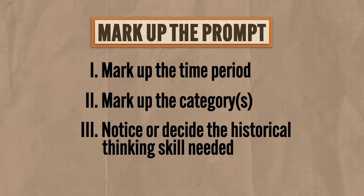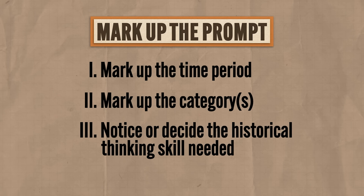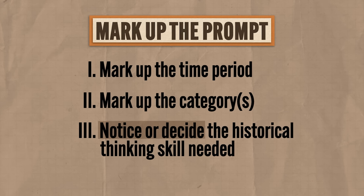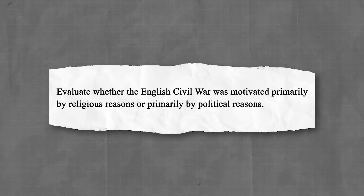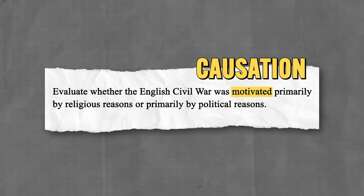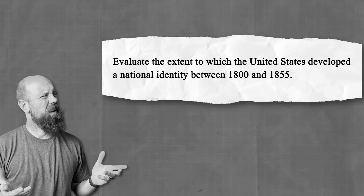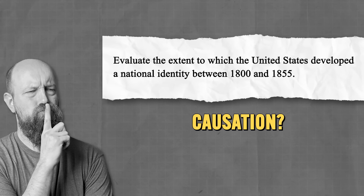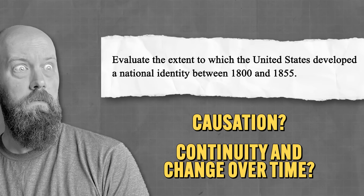If you start talking about economic reasons for the English Civil War, you're not going to get any points. The third thing you need to do is either notice or decide which historical thinking skill is going to frame your essay. Sometimes they'll tell you what that skill is and sometimes they won't. In the Euro prompt, the thinking skill is explicitly stated — causation. But in the 2022 APUSH exam prompt, the skill isn't explicitly stated, so you could write a causation essay, a continuity and change over time essay, or whatever — it's writer's choice.